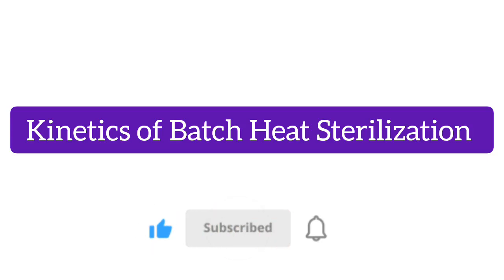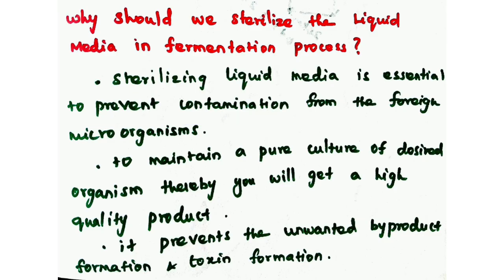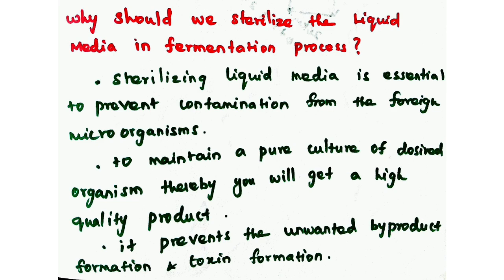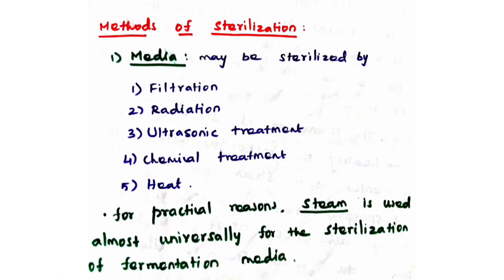Welcome to Biotech Notebook. In this video we are going to see kinetics of batch heat sterilization of liquid media. Sterilizing liquid media before use in your process is important to prevent contamination from foreign microorganisms such as bacteria, viruses, fungi, and so on. Sterilizing your media is essential for maintaining a pure culture of the desired microorganism, thereby yielding high quality products, and it also prevents unwanted byproduct and toxin formation.